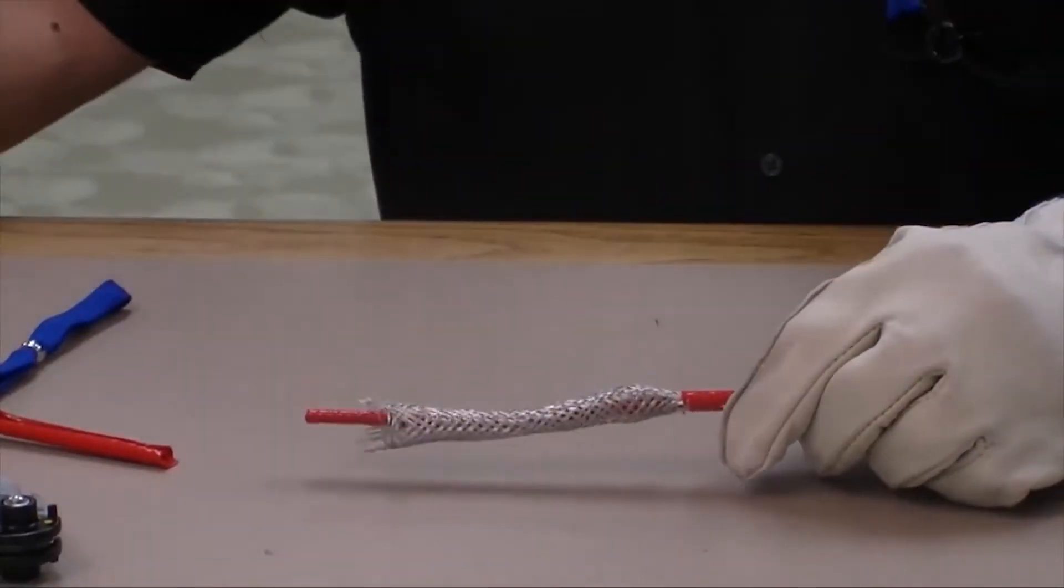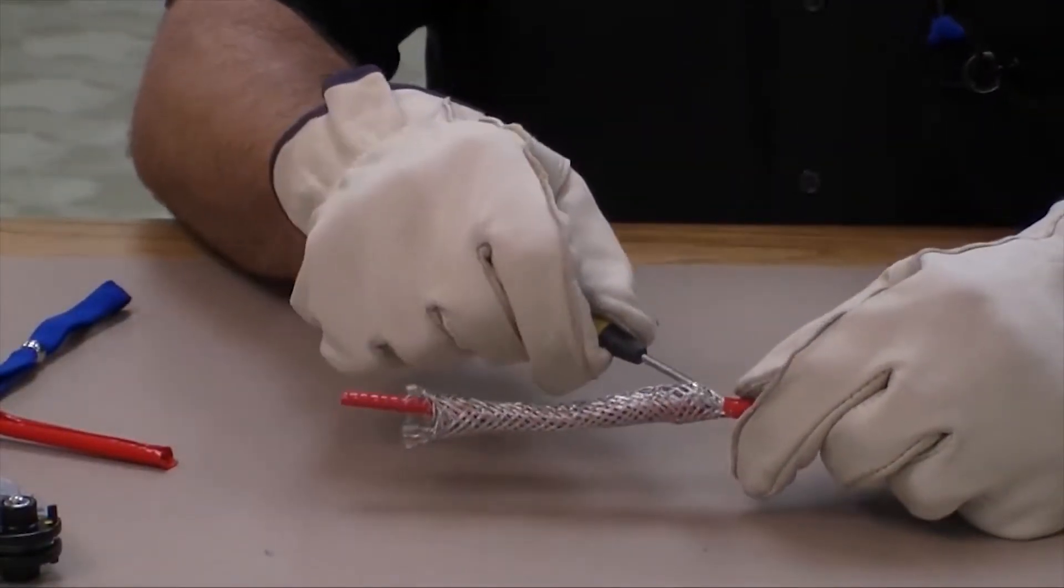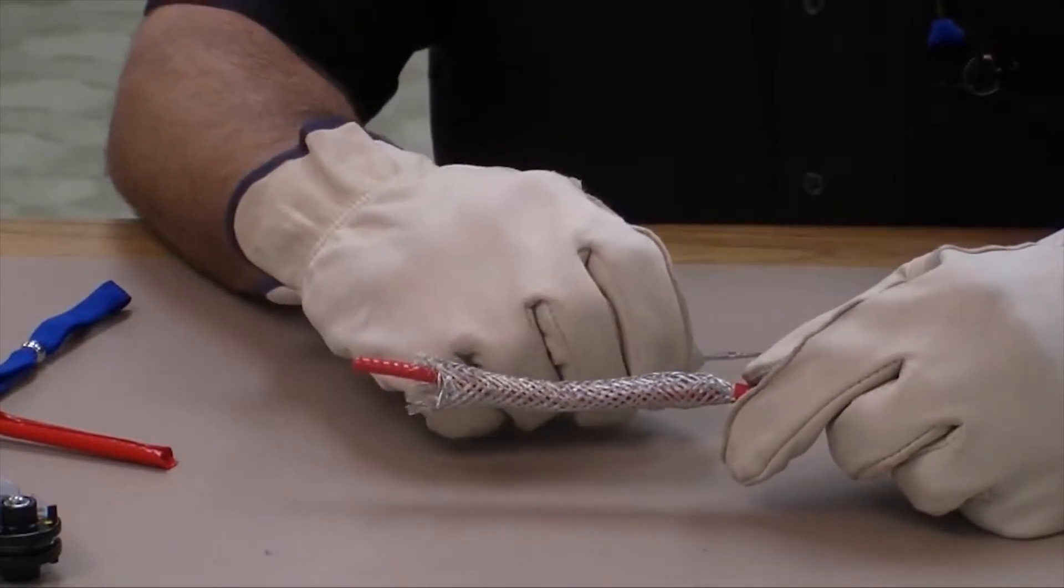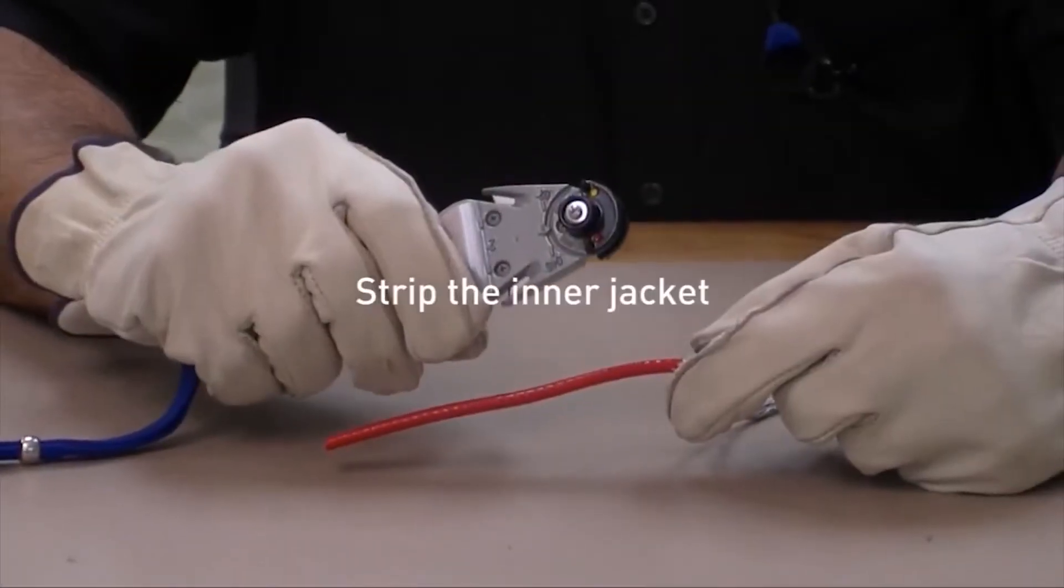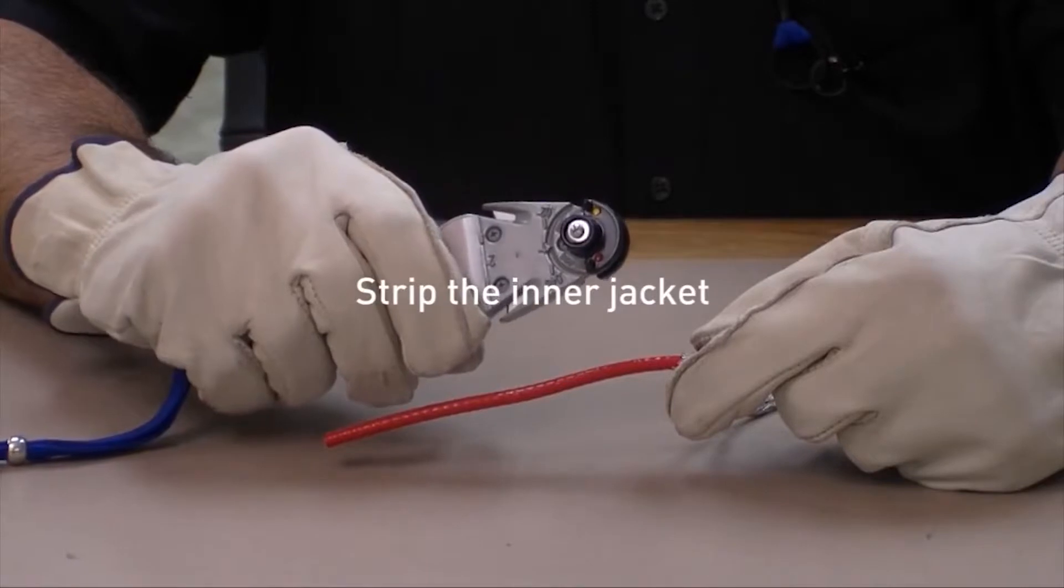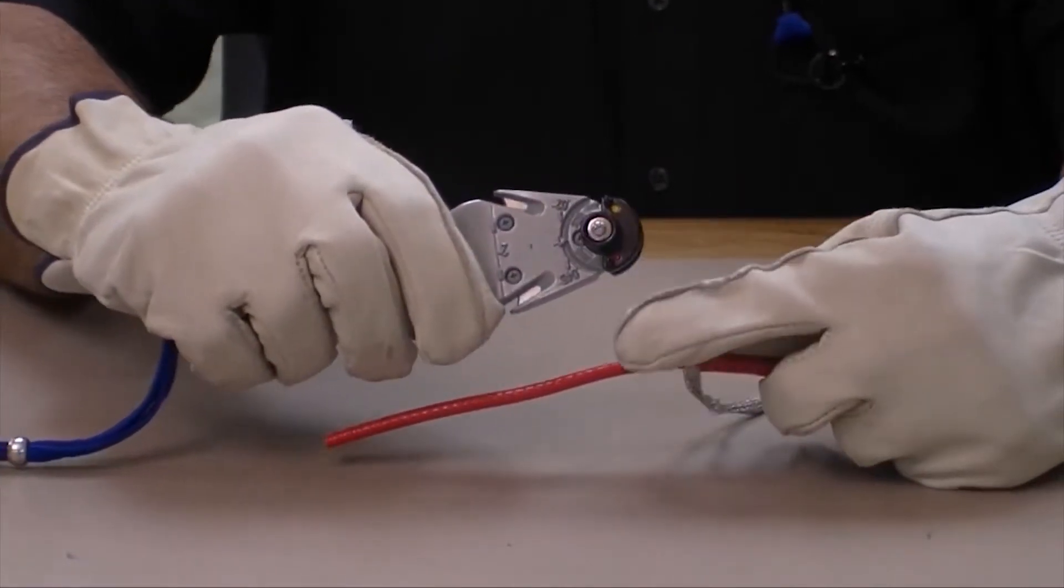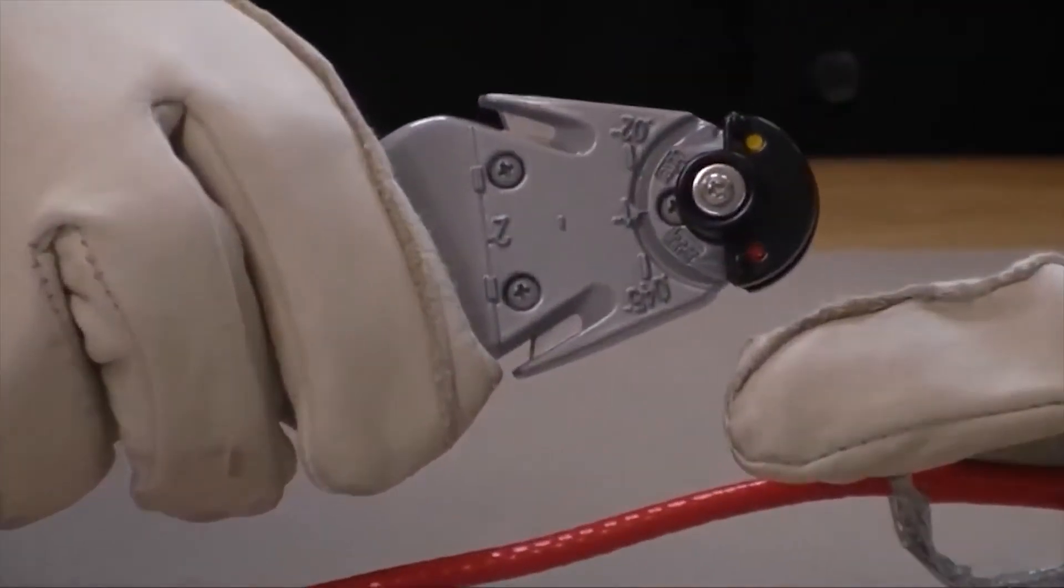Complete the braid preparation steps in the connection kit insulation instructions. Use the blade marked inner with the red dot to score around the inner jacket of the heating cable.